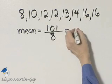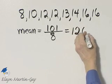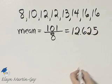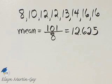Once you divide, you'll find a quotient of 12.625, so that's 12 and 625 thousandths. That's your mean.